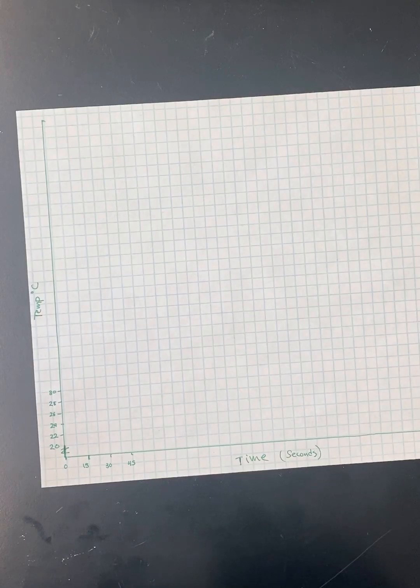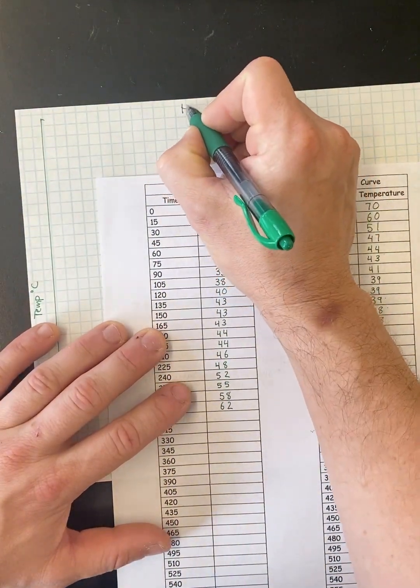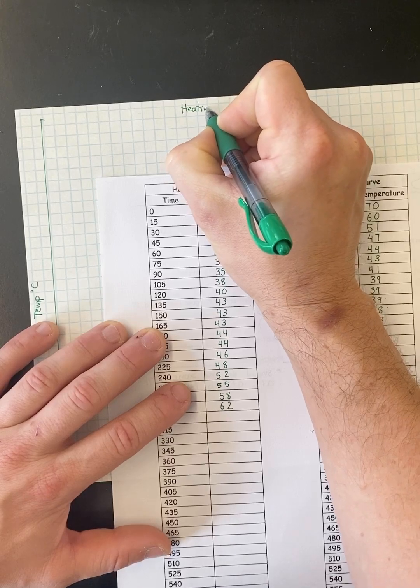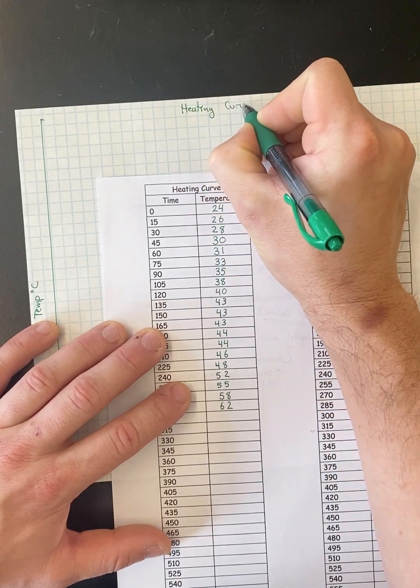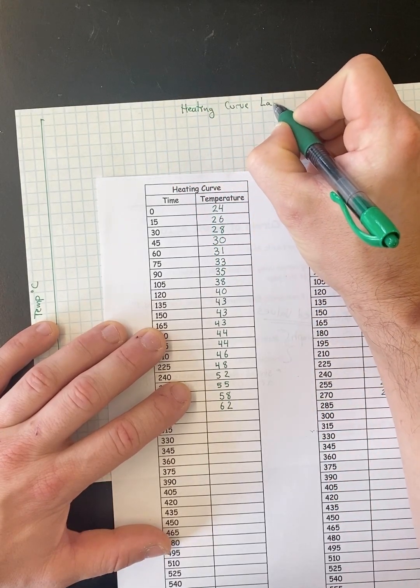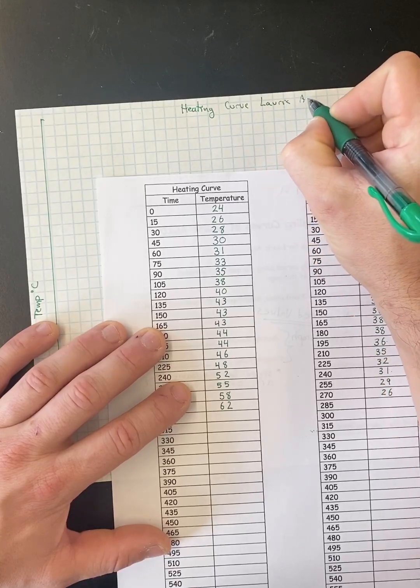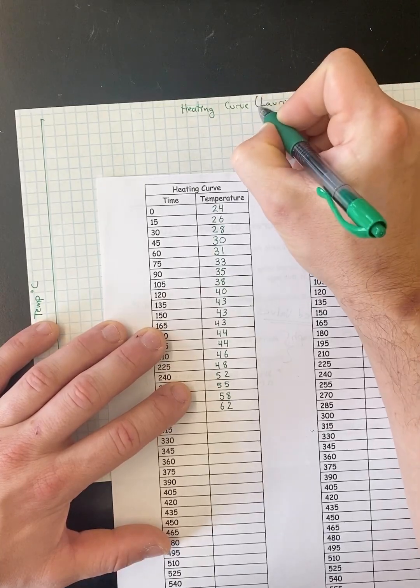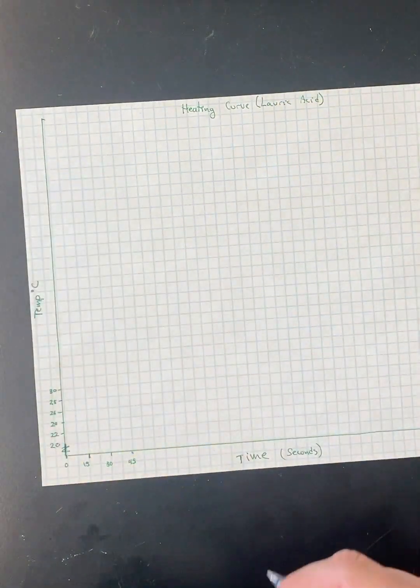So and then you're also going to need a title. So for your title, let's do the heating curve. This one's just going to be called heating curve, lauric acid, cooling would be the same.